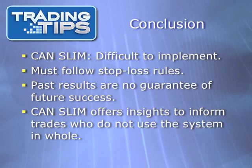Obviously, CAN SLIM is not an easy strategy to implement. There's no screening software you can use to find non-quantifiable things such as new products — it requires time and research. People who have put in time with this system have been successful. However, it is also a question of whether or not the time could be better spent. Another problem people have with this system is its requirement to cut losses at 8%. But the system founder, O'Neill, says that in order to be successful, you have to follow all parts of the system, not just the parts that you like.